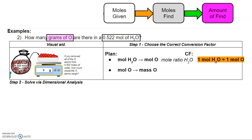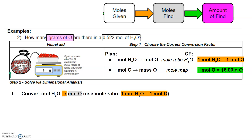The next step is to go from moles of oxygen to mass of oxygen. When converting between different amounts of the same substance — moles of oxygen to mass of oxygen — we use the mole map. Going from moles to mass, you use the molar mass. From the periodic table, the average atomic mass of oxygen is 16 grams, so one mole of oxygen is equivalent to 16 grams. Starting with 0.522 moles of water over one, multiplied by the mole ratio with moles of water on the bottom and moles of oxygen on top, we get 0.522 moles of oxygen — which makes sense, because one mole of water has one mole of oxygen.